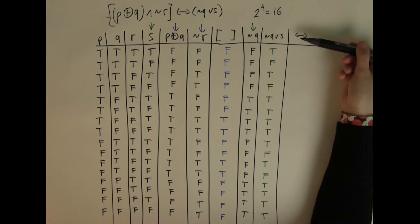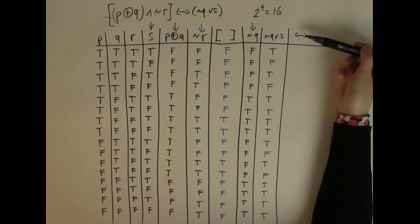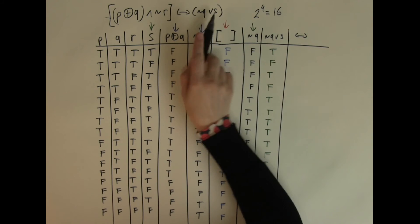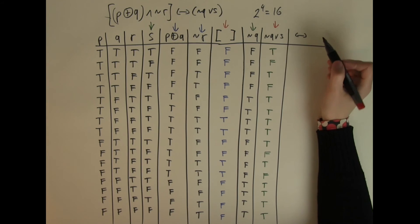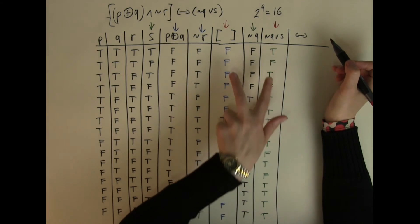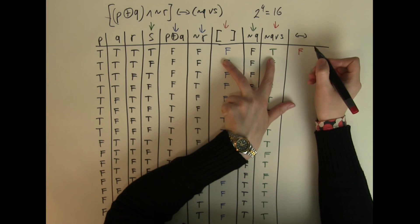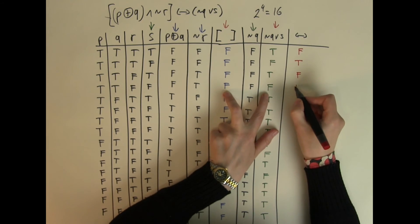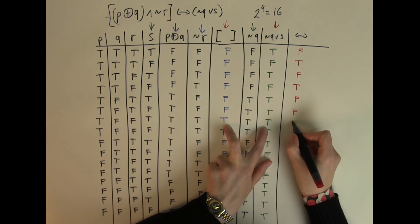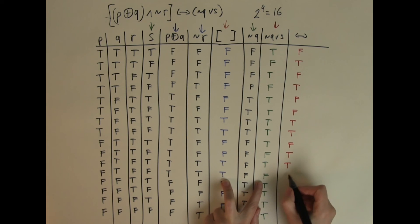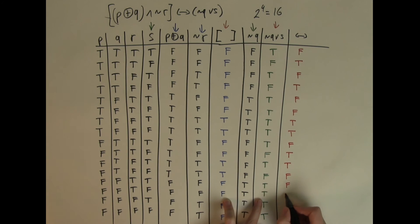The final answer uses the IF AND ONLY IF, combining the square bracket column and the NOT Q OR S column. IF AND ONLY IF returns true if the inputs are the same and false if the inputs are different. Going through all sixteen rows: different gives false, same gives true, different gives false, same gives true, different gives false, different gives false, same gives true, same gives true, same gives true, different gives false, different gives false, different gives false, different gives false, different gives false, and different gives false.